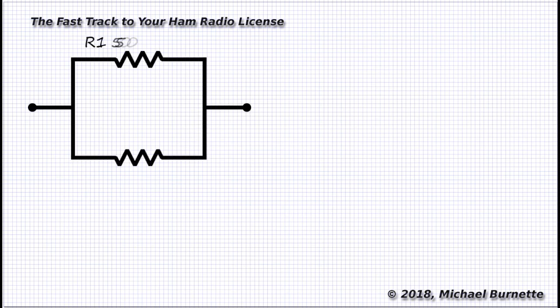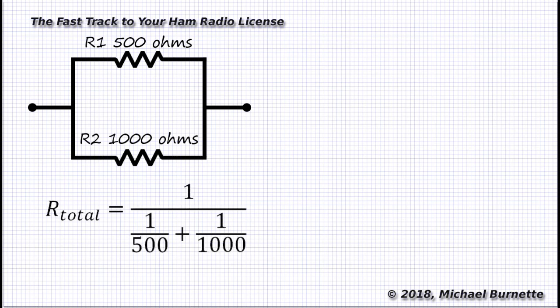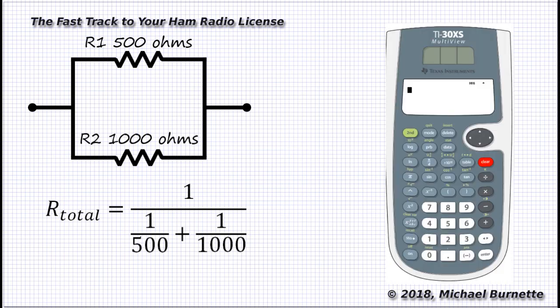We'll put a 500 ohm resistor in parallel with a 1000 ohm resistor. With values plugged in, our formula will be R total equals one over one over 500 plus one over 1000. Now here's where I really like the TI-30XS calculator. Even though I admit it's a bit of overkill for the general exam. It lets me enter that just the way you see it there.